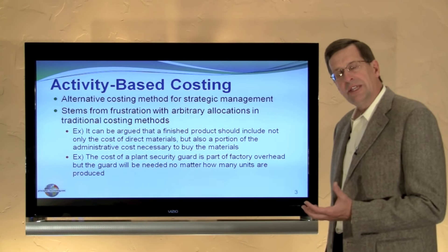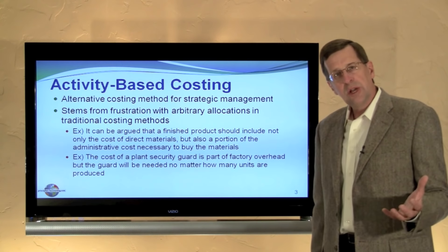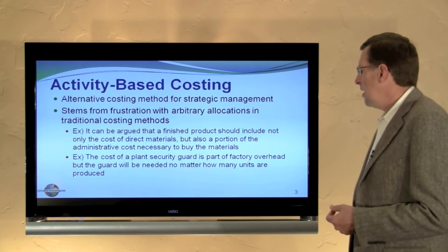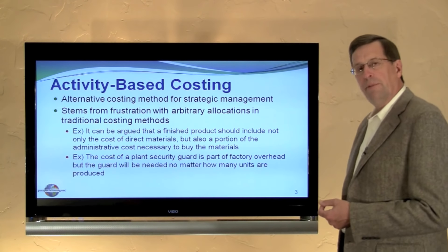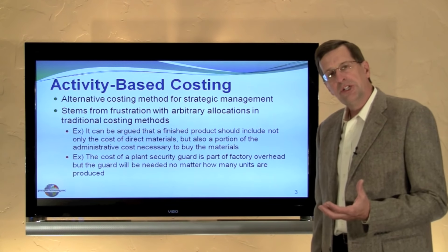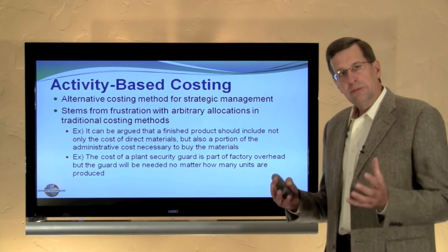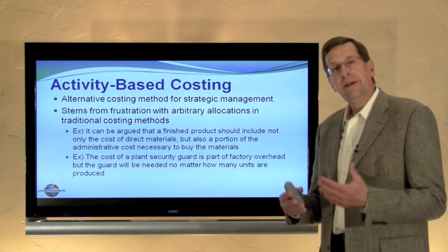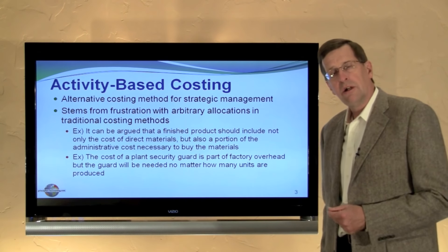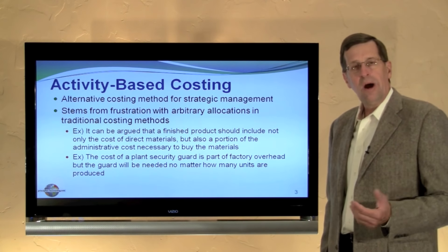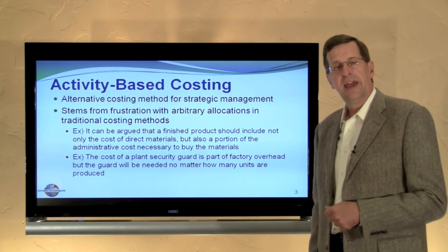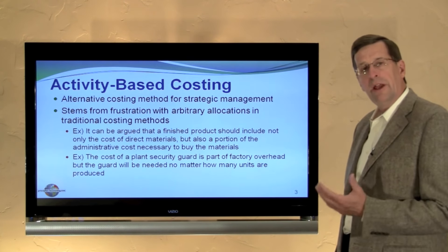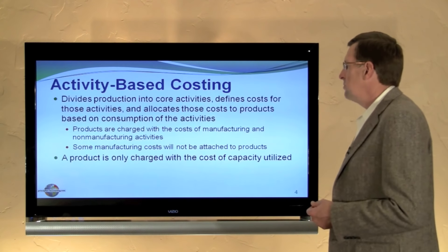In a traditional costing model, the administrative costs are charged to expense in the period — they don't get assigned to a particular product. Conversely, we may have the cost of a plant security guard. In a traditional costing model, that guard is part of factory overhead which is allocated to all of our production. However, it can be argued that the guard will be needed whether or not any production occurs, and thus there's a question about why assign or try to determine the cost of that for our productive output. There's some kind of mismatch that may occur and cause some distorted decision-making as a result.